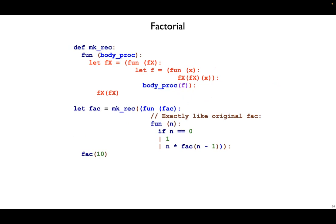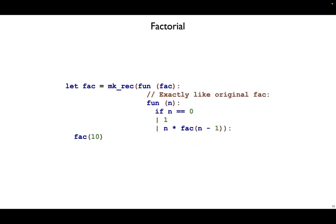At this point we can actually split out our loop-making code from factorial — these can be two separate chunks. Now at the top we have `makeRec`, which takes in any function with a body procedure and ties the loop for that. Then at the bottom, we can define factorial with a call to `makeRec`. And just like I promised, `makeRec` now has nothing to do with factorial, but it lets us define recursive functions in an almost natural way.